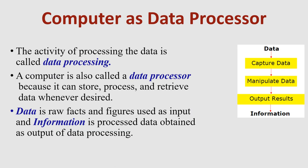How does a computer work as a data processor? The activity of processing data is called data processing. A computer is also known as a data processor because it can store, process, and retrieve data whenever required. The steps involved in data processing are: capturing the data, then manipulating the data, and then providing the output.